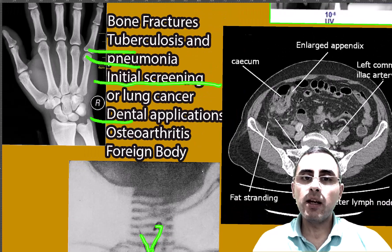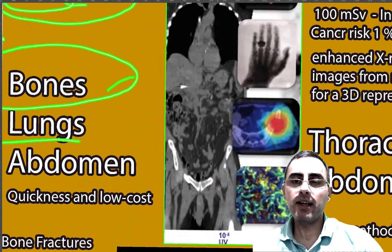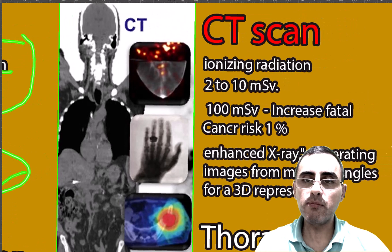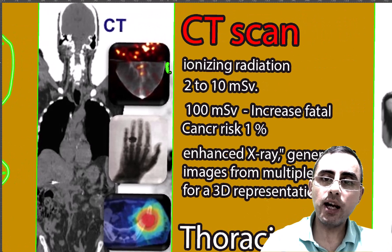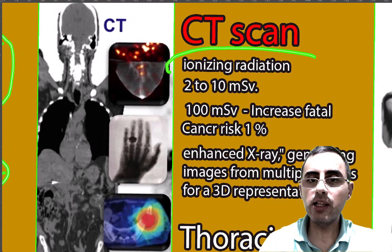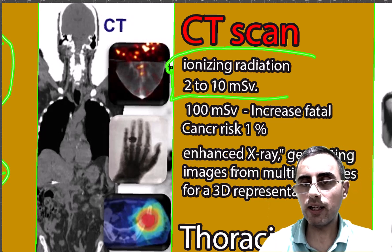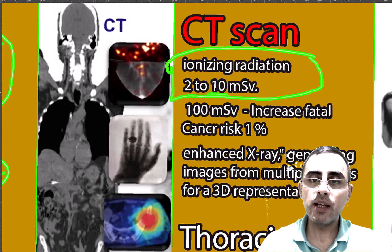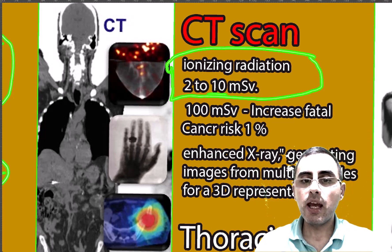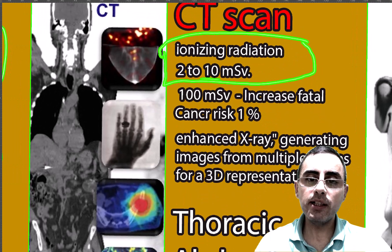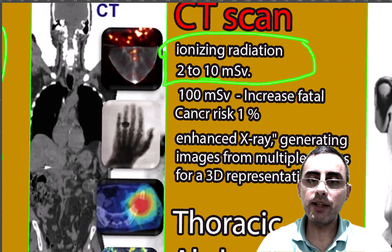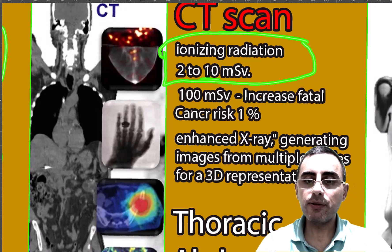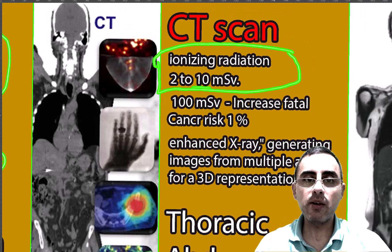Now let's talk about CT scan. CT scan also uses ionizing radiation, and this radiation is quite high — around 2 to 10 millisieverts, which is sometimes 10 to 100 times more than X-ray. CT scan is essentially an enhanced X-ray that generates images from multiple angles to produce a 3D representation.